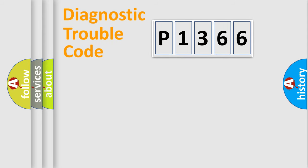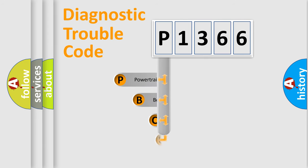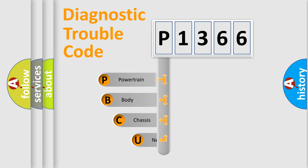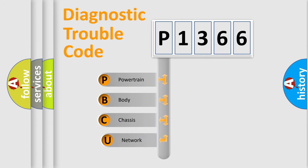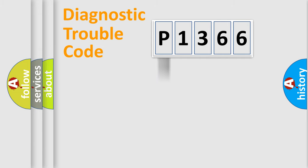First, let's look at the history of diagnostic fault code composition according to the OBD2 protocol, which is unified for all automakers since 2000. We divide the electric system of an automobile into four basic units: Powertrain, Body, Chassis, and Network.